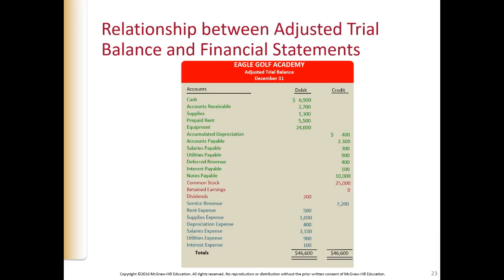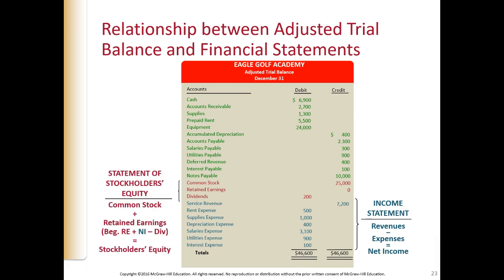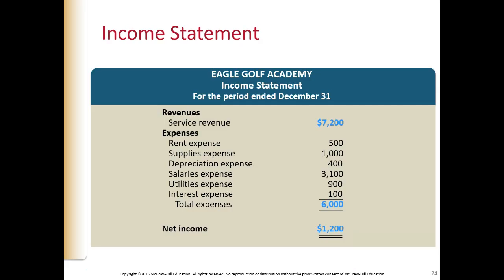To start preparing the statements from the adjusted trial balance: the income statement accounts are at the bottom — from revenue down through all the expenses. The equity statement accounts are common stock, retained earnings, and dividends. The balance sheet accounts are in the upper portion of the adjusted trial balance. Looking at this adjusted trial balance, we pull off the bottom set of numbers first — just the income statement numbers. We record the revenue, all the expenses, and net income comes to $1,200.